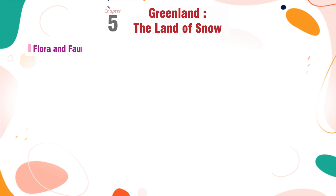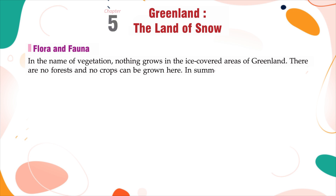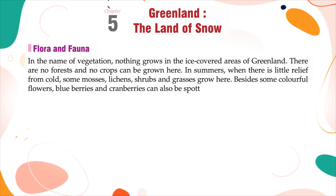Flora and Fauna: In terms of vegetation, nothing grows in the ice-covered areas of Greenland. There are no forests and no crops can be grown here. In summers, when there is little relief from cold, some mosses, lichens, shrubs, and grasses grow here. Besides some colorful flowers, blueberries and cranberries can also be spotted here.